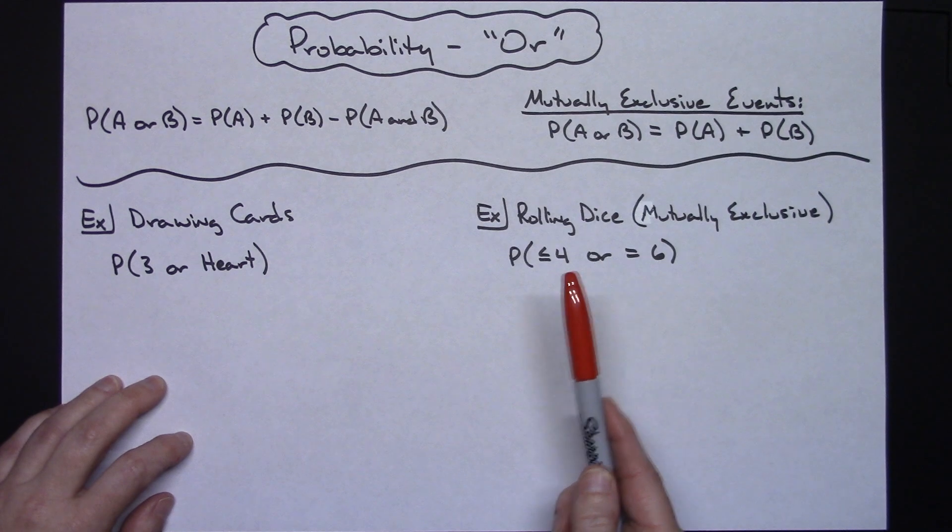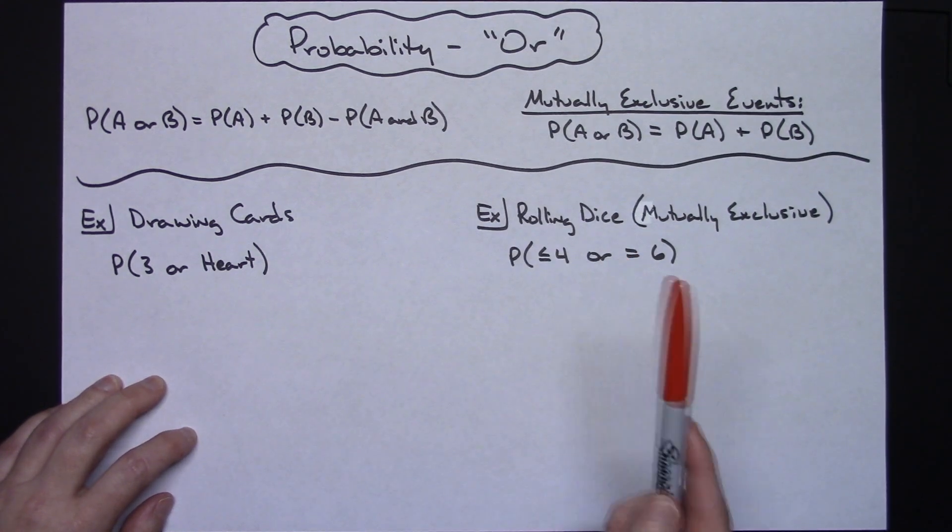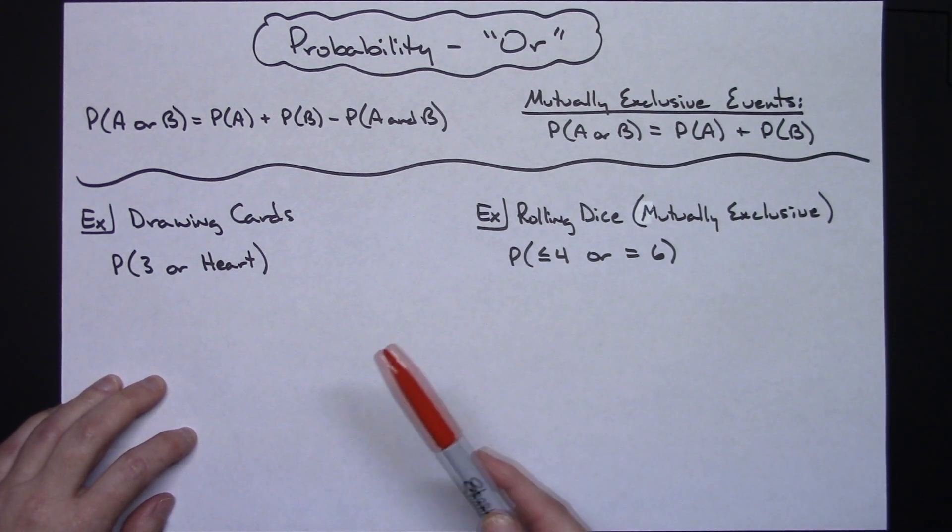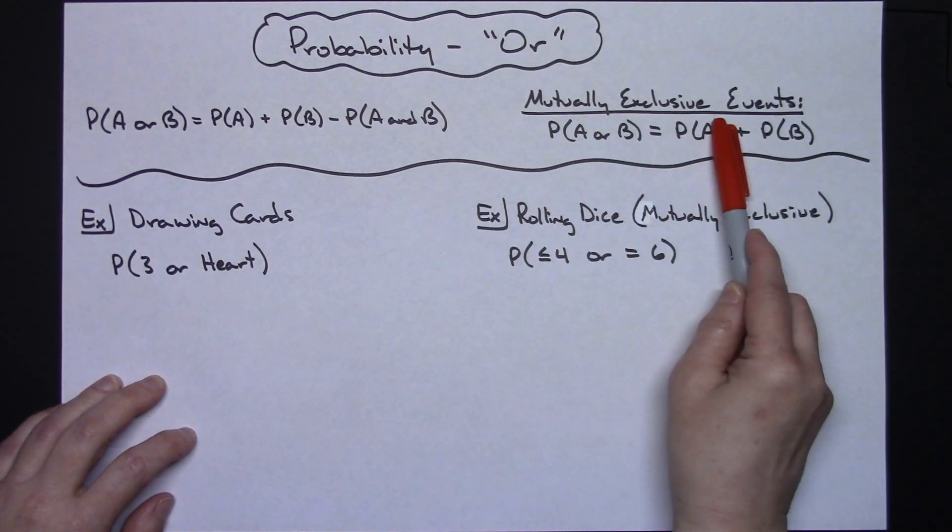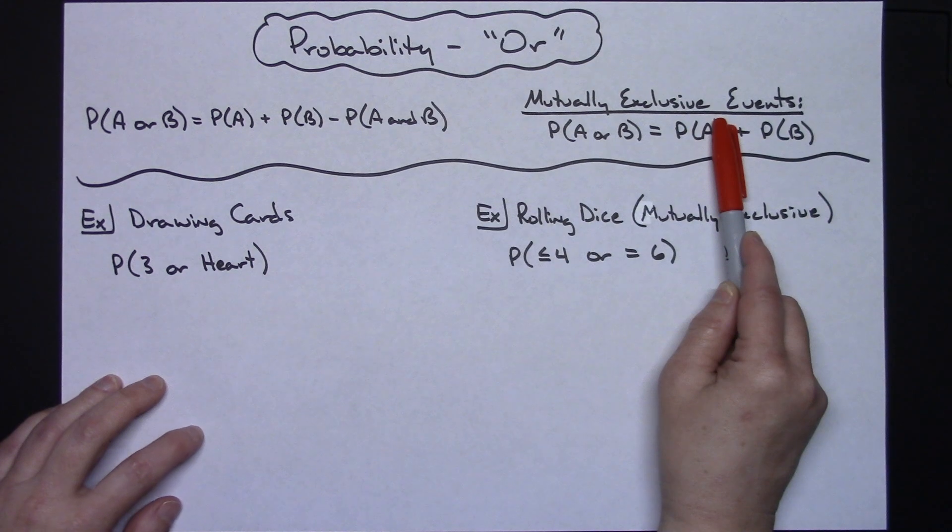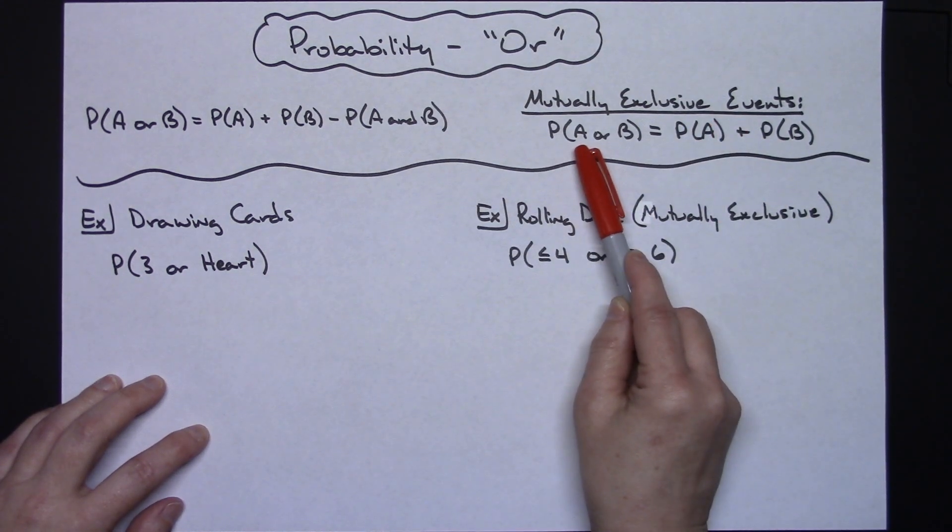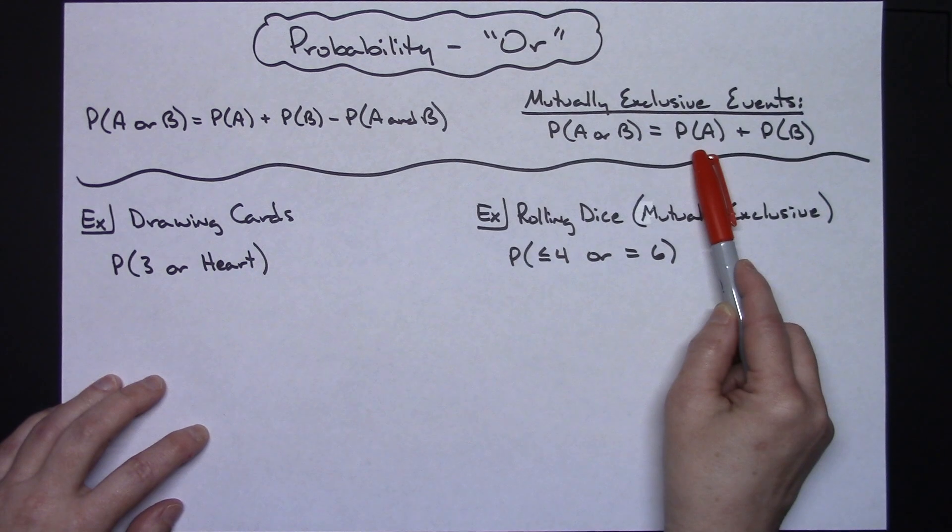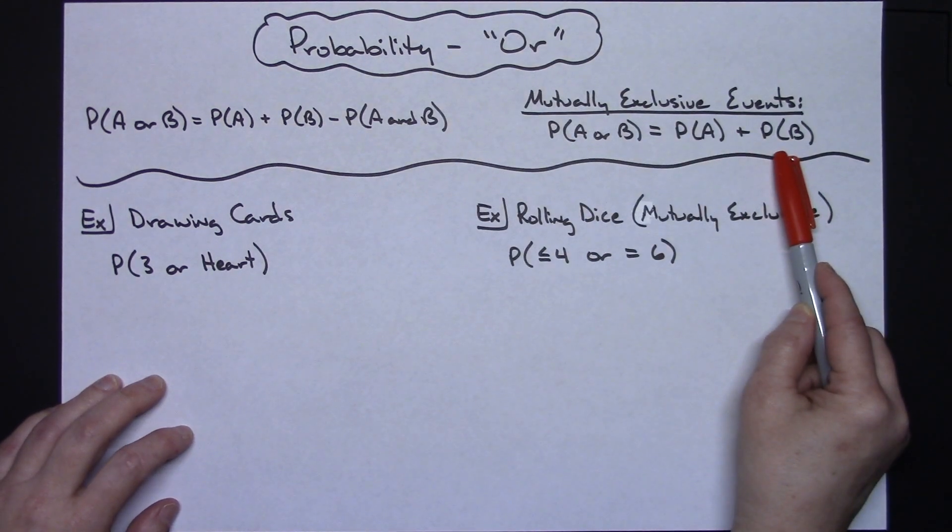Now if A and B are mutually exclusive, that means that the two events cannot occur at the same time, so they would be classified as mutually exclusive events. Then the probability of A or B can be found by the probability of A plus the probability of B.